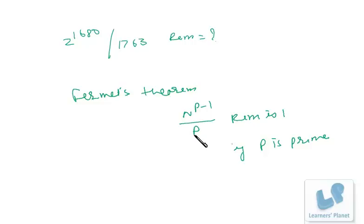So if n raised to p minus 1, n can be any number, maybe prime, may not be prime. So if n raised to p minus 1 is divided by p then remainder is 1. That is what Fermat's theorem is.